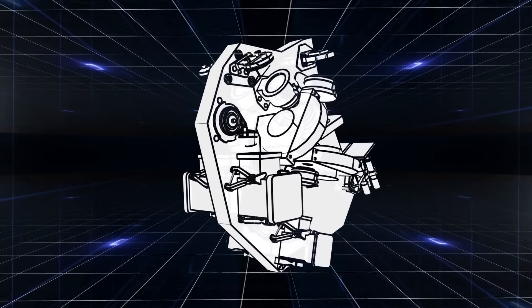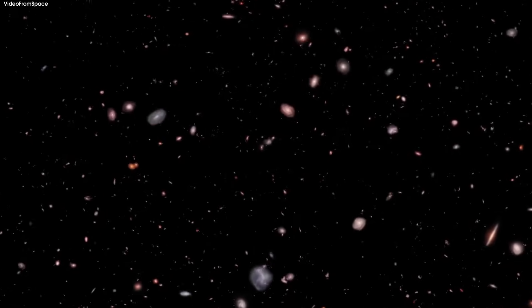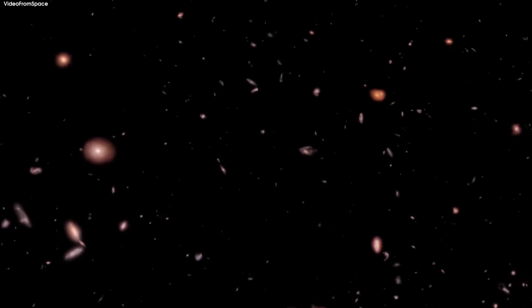Webb's NIRCam detects wavelengths of light that are broader than visible light and thus can't be seen by the human eye. So, to compose the new image, researchers translated the infrared light in different colors.